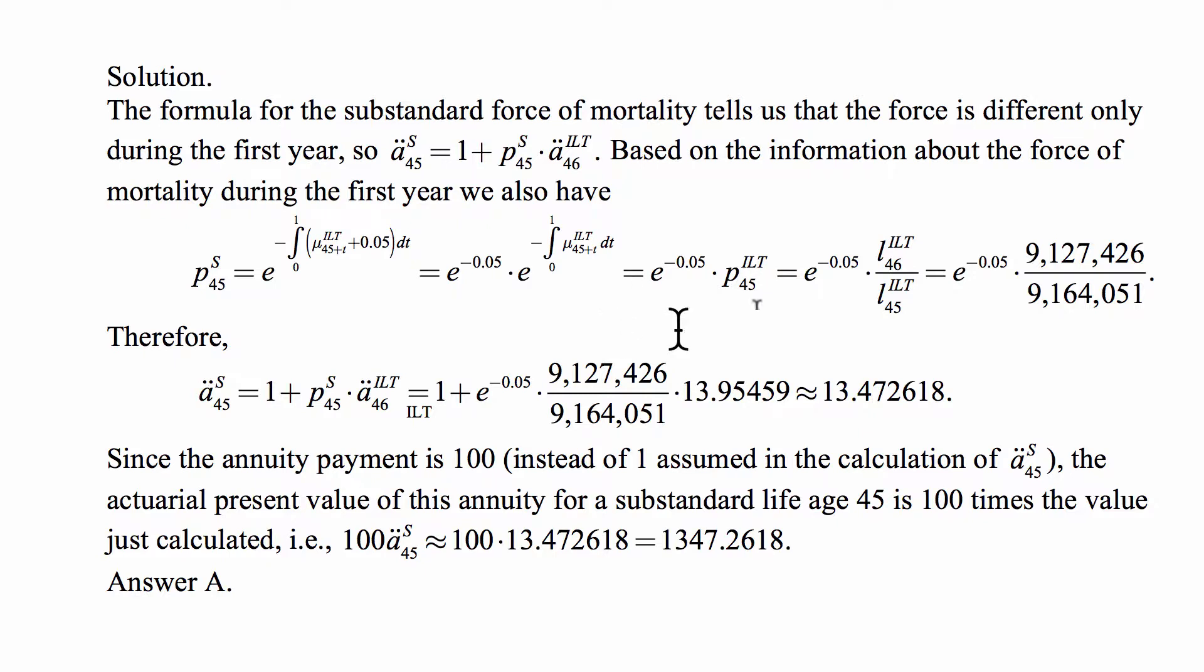So we plug it all in, and we get approximately 13.472618. But the annuity in the problem is not a unit annuity. To get the answer for the problem, we need to multiply this by 100, and therefore we get 1347.2618. That's answer A.